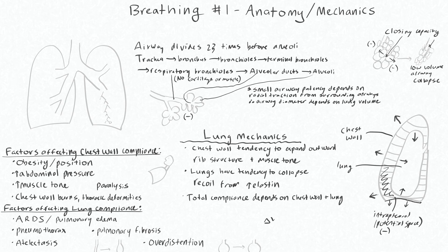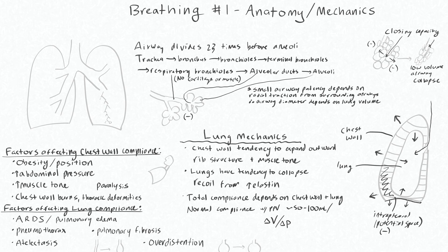Let's talk about compliance now, which is the change in volume of your lungs that you get with a change in pressure. Since when we give somebody a breath we are having to expand both the lung and the chest wall, the total compliance is going to depend on the compliance of the chest wall and the lung tissue. Normal compliance with positive pressure ventilation is about 50 to 100 mils per centimeter of water of pressure, so for example 10 centimeters of water of positive pressure might give you around 500 mils of volume.